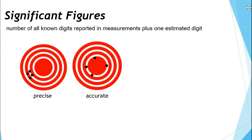By giving a correct number of significant figures, you are indicating to the person reading your scientific information — or that you are talking about your scientific information to — how precise your measurements were.